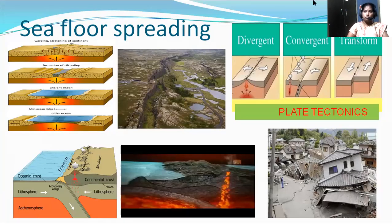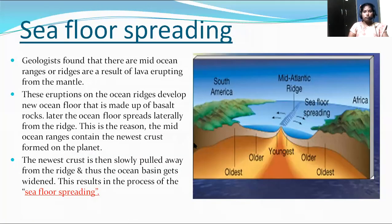The first movement is divergent, under which we study how the sea floor spreads. Geologists found that mid-ocean ridges are a result of lava erupting from the mantle. These eruptions on the ocean ridges develop new ocean floor made up of basalt rocks. The ocean floor spreads laterally from the ridge — this is why mid-ocean ridges contain the newest crust formed on the planet. The newest crust is slowly pulled away from the ridge and the ocean basin gets widened, resulting in sea floor spreading.